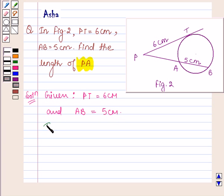And we have to find PA. Now we know that if PAB is a secant to a circle intersecting it at points A and B and PT is a tangent to the circle, then PA into PB is equal to PT square, which is by theorem 10.2 of your book.